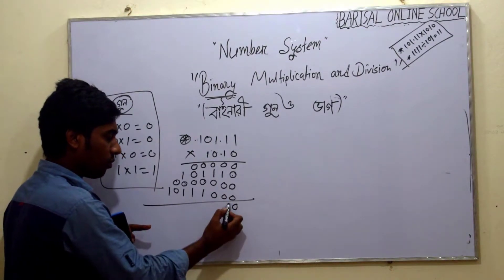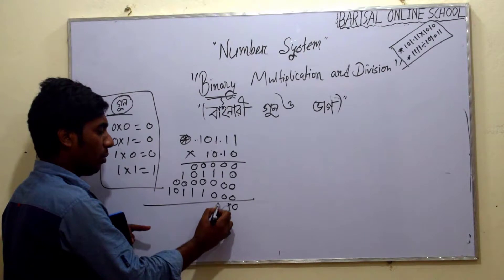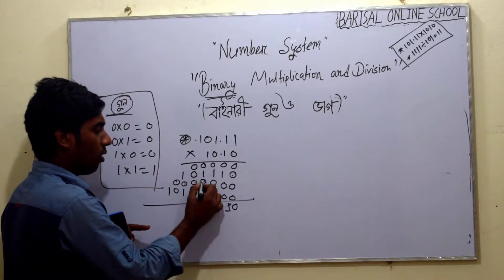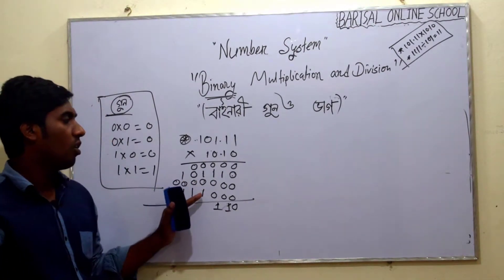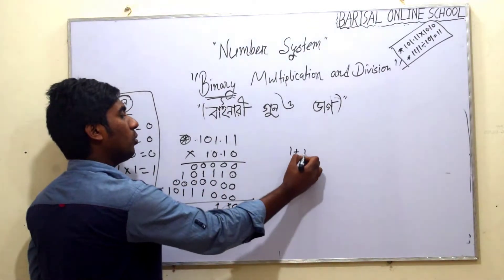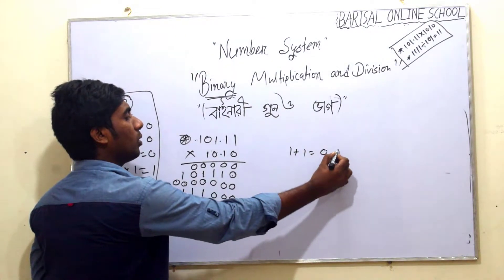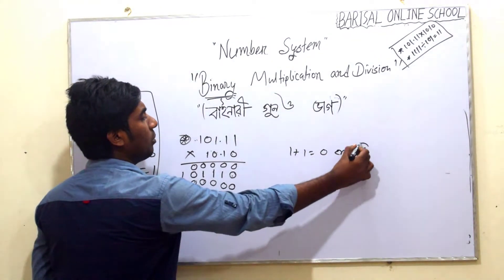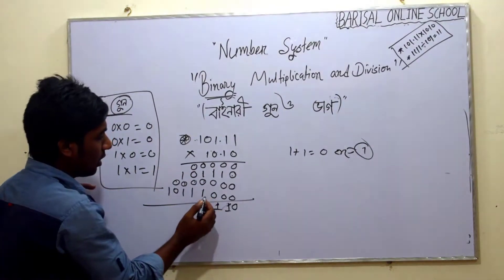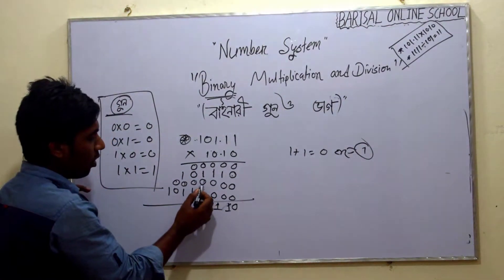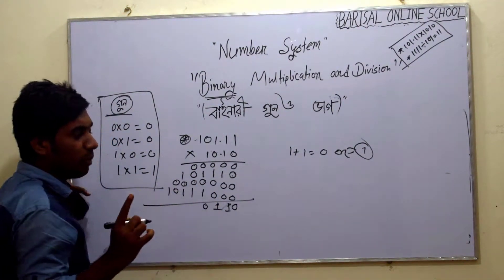So the number of 3 is 0 from the original. So the number of 4 is 0, which means 0 from the original. So the number of 3 is 0 from the original. And here the number of 4 is 0 from the original.